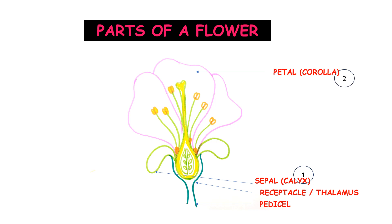The second whorl is the corolla, which is interior to the sepals and is formed of petals — large, brightly colored structures. Petals serve to attract animals or insects due to their bright colors and help in pollination.